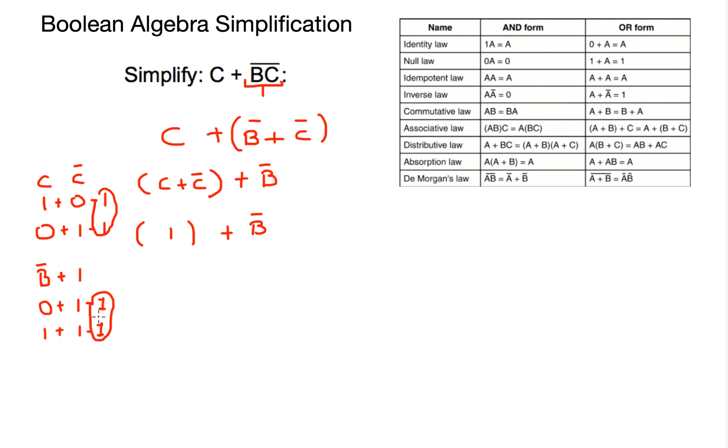So the answer to C or not B and C is just 1 or true.